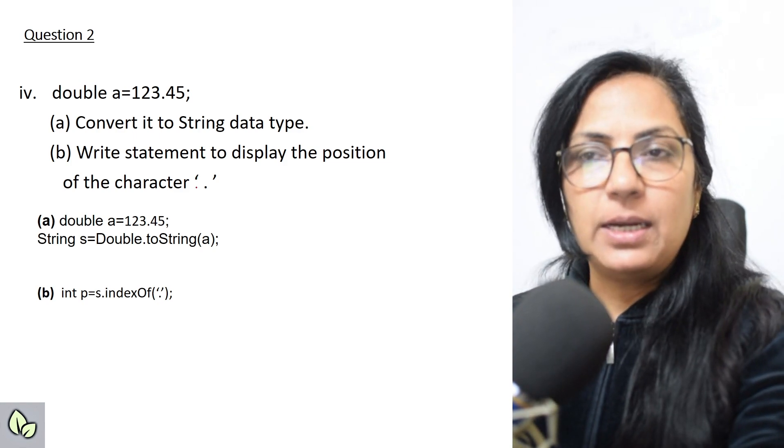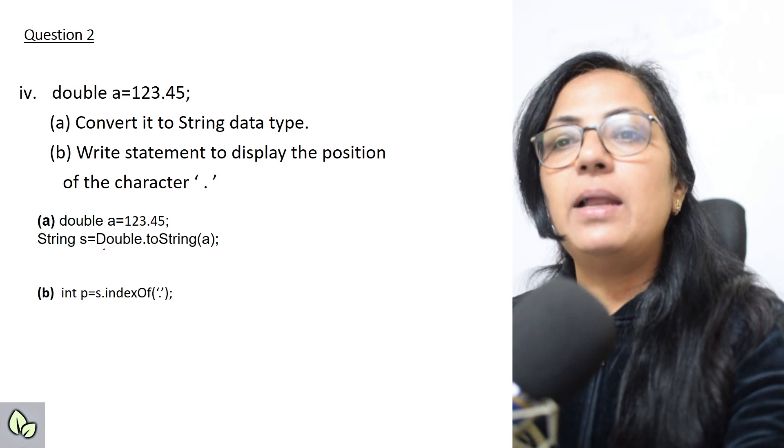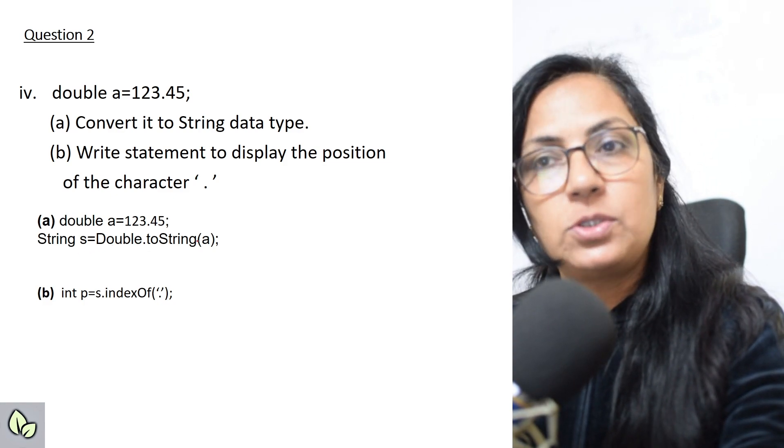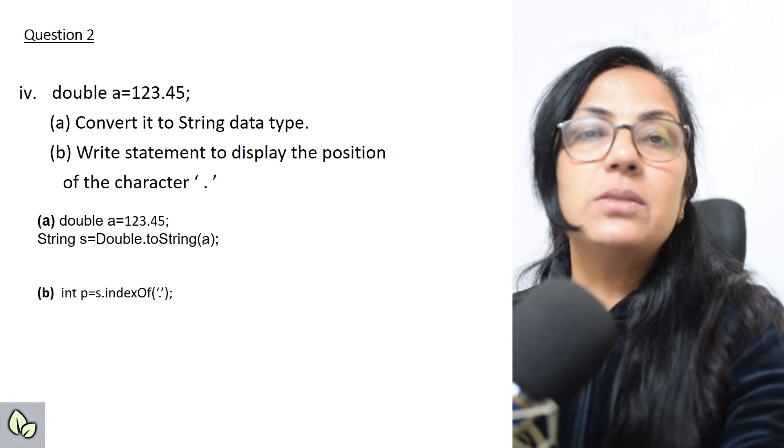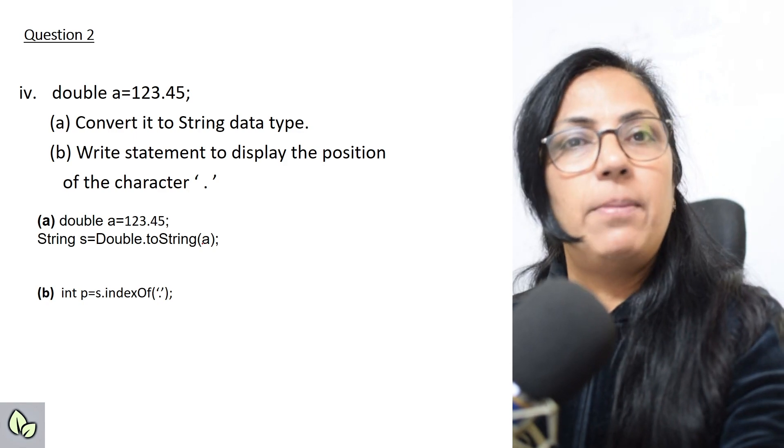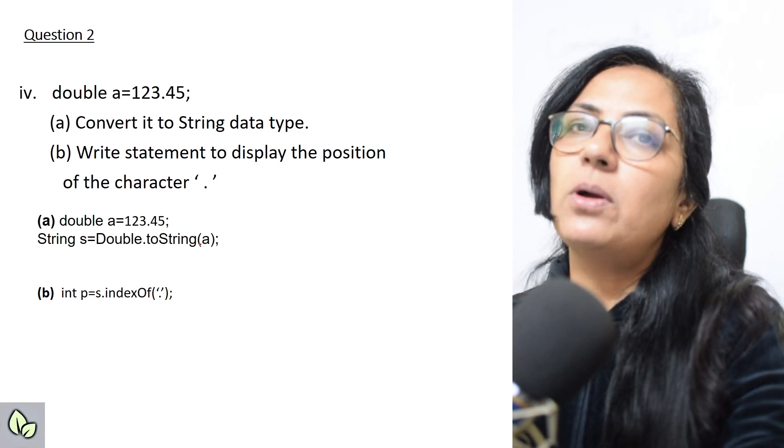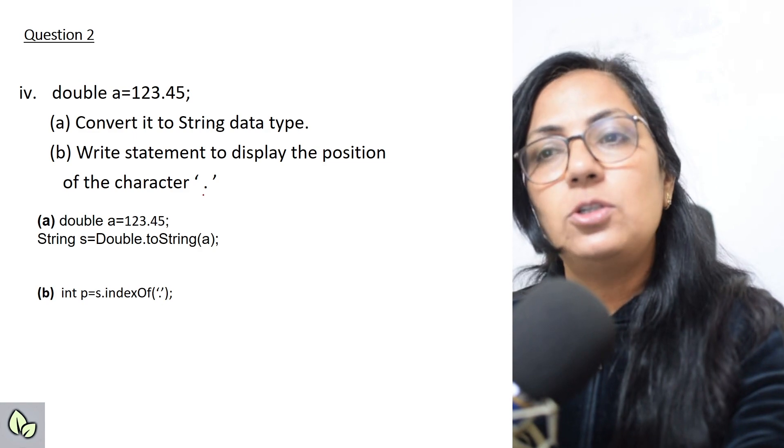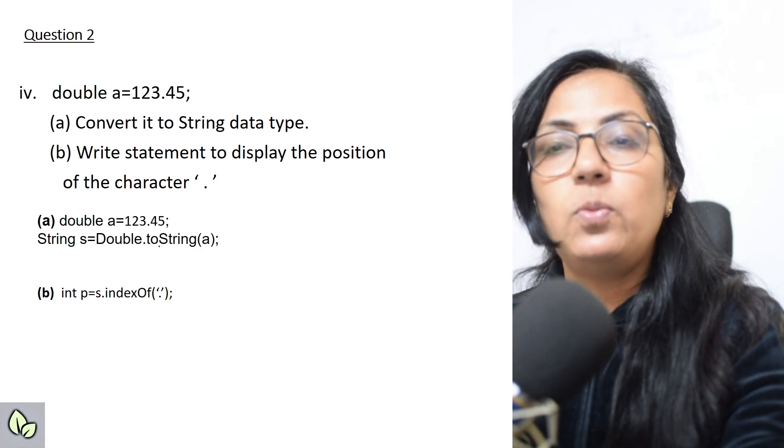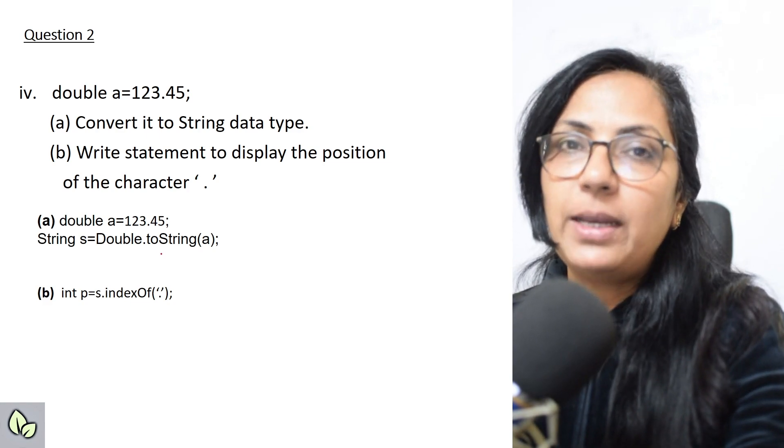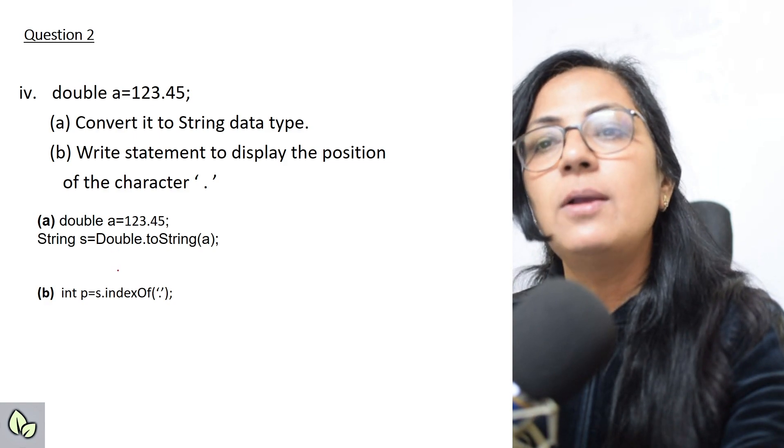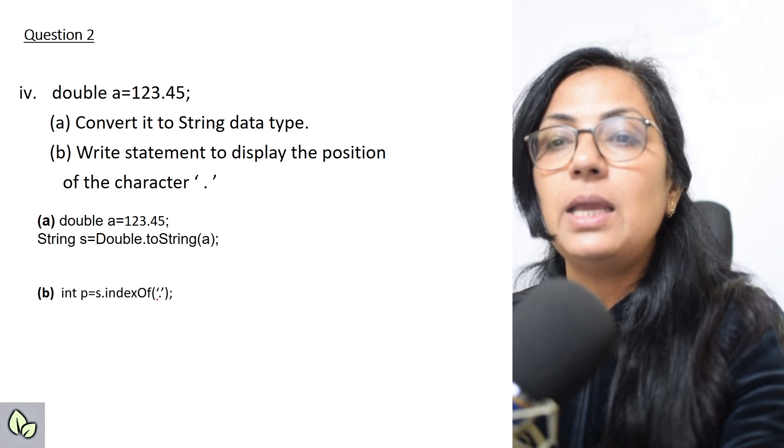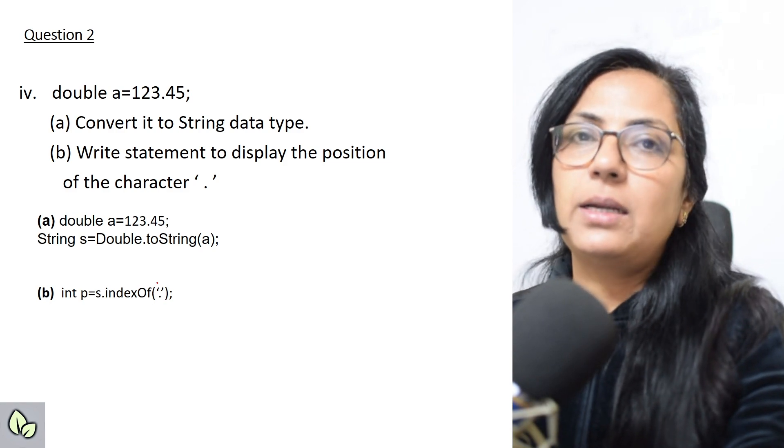Next question: double a equals to one two three point four five. First part of this is convert it to string data type. For conversion to string type, it is string variable name equals to Double.toString and the variable name. Children, please practice this because most of the time we don't do this in programming, so I want all of you to practice because this is also very important. One question can come from this topic as well. Write statement to display the position of the character dot. Now since we have converted this to string type, we can find the position. For finding the position, indexOf function is used, so you will be writing the variable name, the string variable name which contains that value, dot indexOf and within single quotes dot, or the character for which you want to find the position.